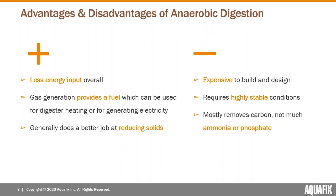The upsides are that a well-running digester doesn't need a lot of energy input because the biogas can fuel heating or electricity generation. There's no aeration required and mixing is fairly efficient overall. Anaerobic digesters also do a good job reducing solids and are more complementary to an activated sludge process than aerobic digesters — they can degrade substrates not efficiently degraded aerobically, like fats, and achieve higher total volatile solids destruction.